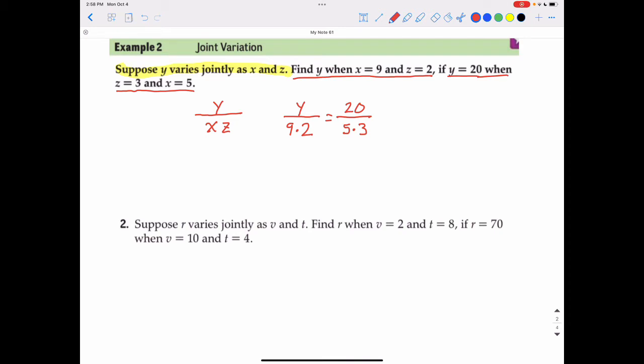Before I cross multiply, I'm going to go ahead and multiply the 9 times 2, and that's 18, and the 5 times 3, and that's 15. And then cross multiply. So 15y will equal 20 times 18, which is 360. Divide by 15, and we get an answer of y equals 24.